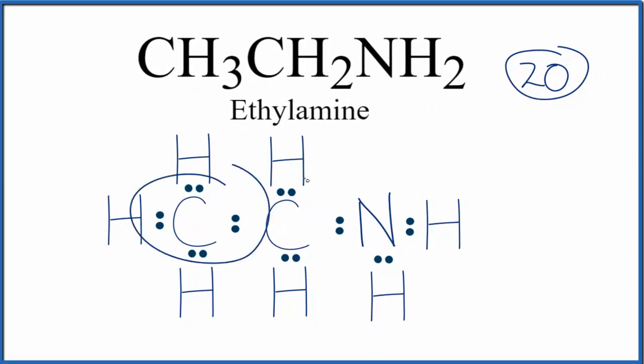So each carbon here has eight valence electrons. It has an octet. Each hydrogen has two, so its outer shell is full. The nitrogen, we only have six. And if you count up all of these electrons, we've only used 18. We have a total of 20. So we're just going to put that last pair here as a lone pair on the nitrogen.